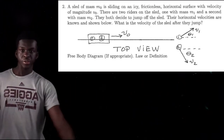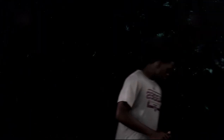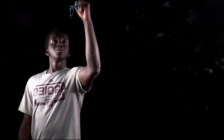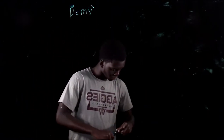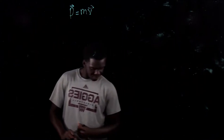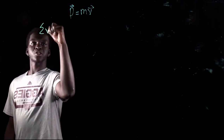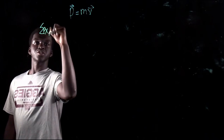Moving on to question two — the question is going to pop up right here, take your screenshot, read it, and we'll get started. We're going to find the velocity of the sleds after they jump, so we need the velocity in the x direction and in the y direction. We'll start with the momentum equation: p equals mv.